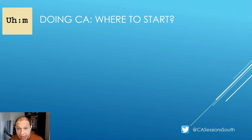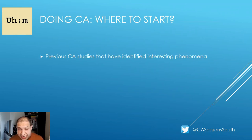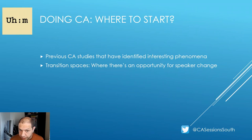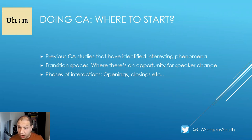Now we have some idea of what we're looking for. The next question is: where do you begin — that is, how do you go about actually doing CA? One of the first ways of identifying interesting phenomena may seem counterintuitive: you look to previous studies to find out where interesting things might be happening. For example, the transition spaces — the places where there's an opportunity for a change in speaker. How do turns end? How do the next turns begin? What happens in between? You can also look at how interactions start or how they end.